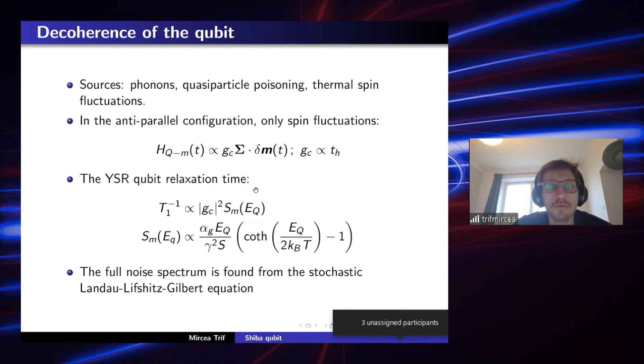it all comes down to how the decoherence processes act in these systems, and not much is known about that. However, we identify several mechanisms, phonons, quasi-particle poisoning, and thermal spin fluctuations, again, of the very same spins that define the impurity. I'm not going to talk about the first two mechanisms. They can be important, at least quasi-particle poisoning could be mitigated by just somehow making better materials, or putting quasi-particle traps to get rid of the quasi-particle population. Phonons can also have some importance, but will not be discussed here. However,